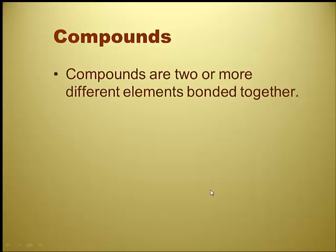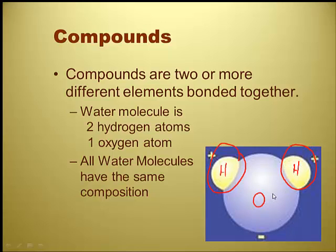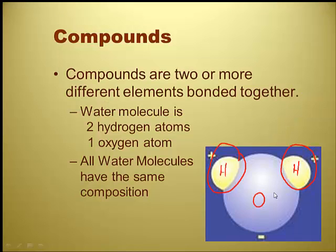Compounds are two or more different elements bonded together. Our typical example is the water molecule — two hydrogens and one oxygen, which kind of looks like Mickey Mouse ears. All water molecules have the same composition; that's the law of constant composition. Every single water molecule has two hydrogens and one oxygen — the same ratio, two to one: H2O.